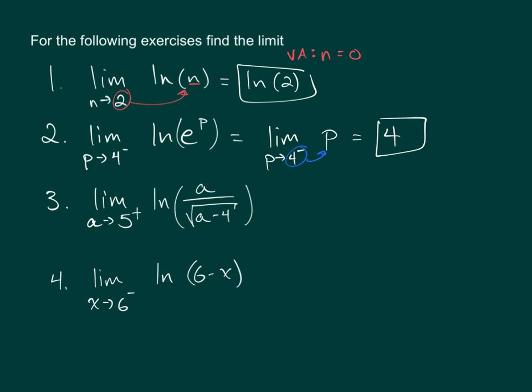In the third example, there is an argument a over square root of a minus 4 as a approaches 5. Again, we are not approaching a vertical asymptote, so we can use direct substitution for a.